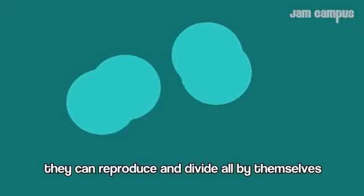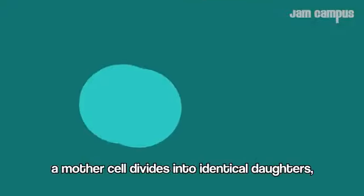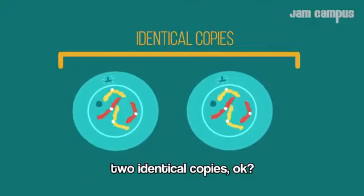Thinking about cells, they can reproduce and divide by themselves. One form of division is known as mitosis. A mother cell divides into identical daughters, perfect copies. Remember this: two identical copies.